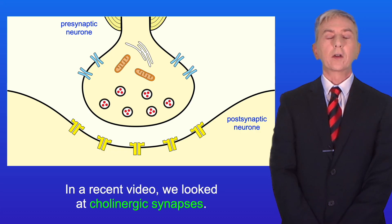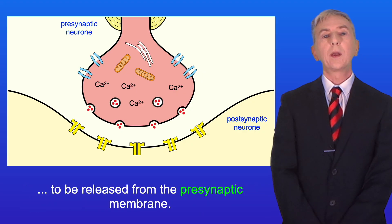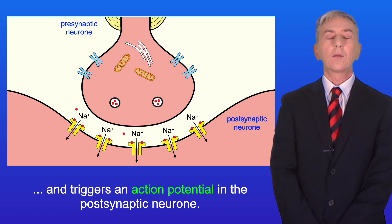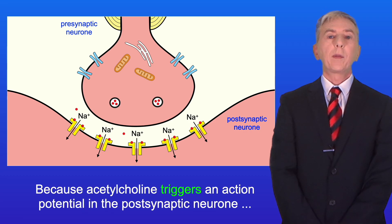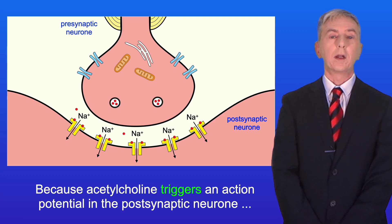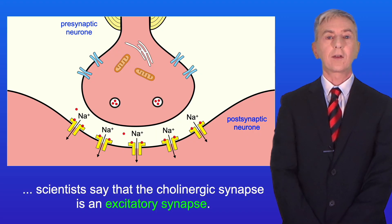In a recent video we looked at cholinergic synapses. In a cholinergic synapse, an action potential triggers the neurotransmitter acetylcholine to be released from the presynaptic membrane. The acetylcholine diffuses across the synaptic cleft and triggers an action potential in the post-synaptic neuron. Because acetylcholine triggers an action potential in the post-synaptic neuron, scientists say that the cholinergic synapse is an excitatory synapse.